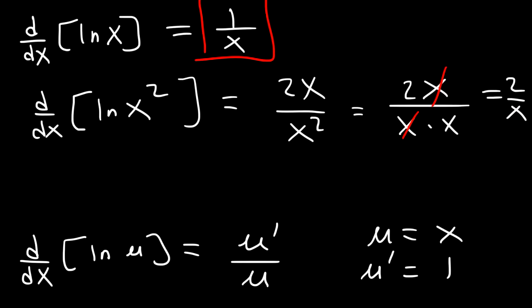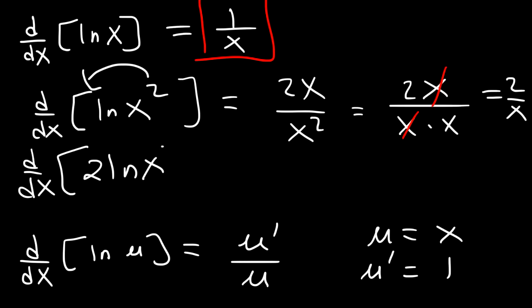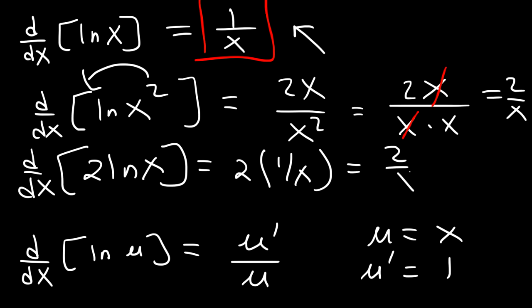What you could also do is move the 2 to the front before finding the derivative. So ln x squared is the same as 2 ln x. And we know the derivative of ln x is 1 over x, so this is going to be 2 times 1 over x, which gives us the same answer of 2 divided by x.